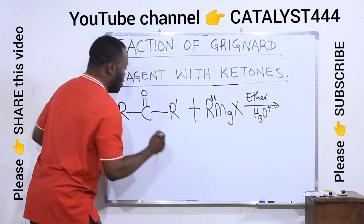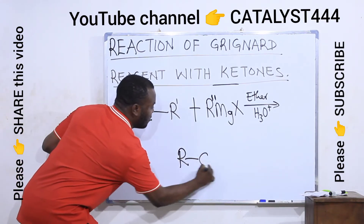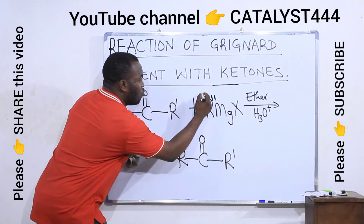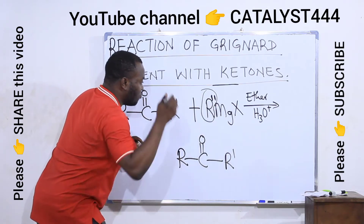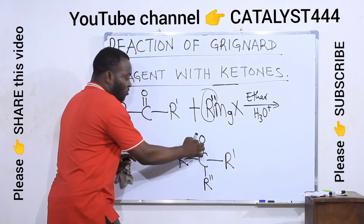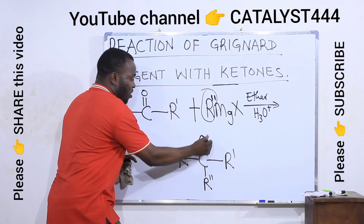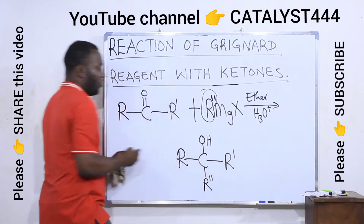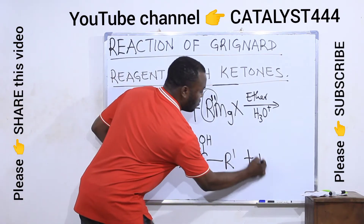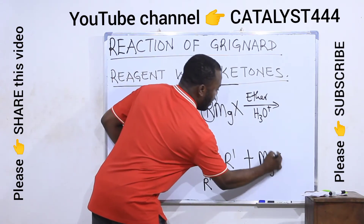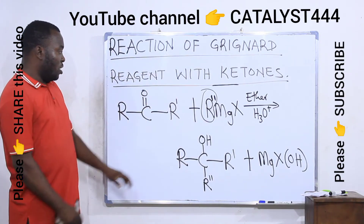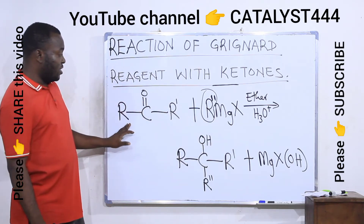Breaking down the ketone R-C(=O)-R', what happens is that the alkyl group present in the Grignard will be disconnected from the Grignard and bonded to the carbonyl functional group of the ketone. Then the oxygen in the carbonyl group will be converted to OH — that is, protonation of the oxygen. The product is a tertiary alcohol, plus MgXOH as the byproduct. This is the product of the reaction between a Grignard reagent and a ketone.